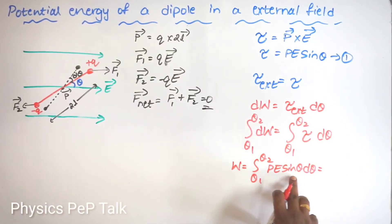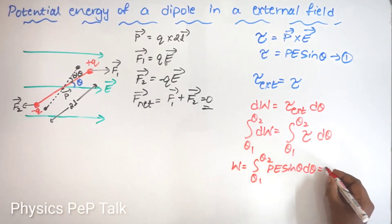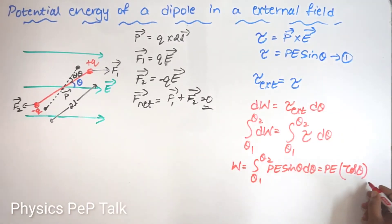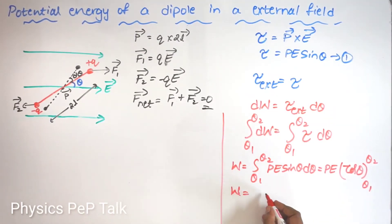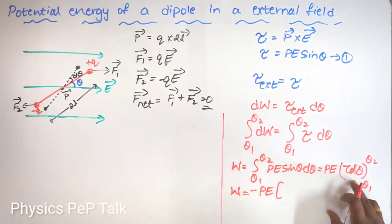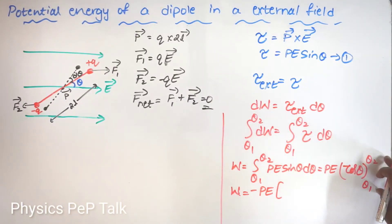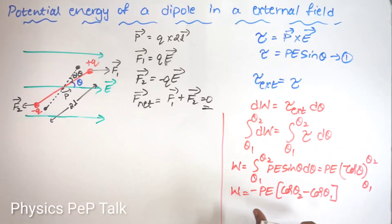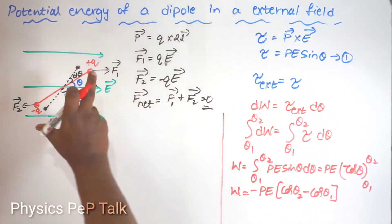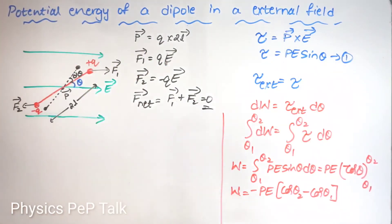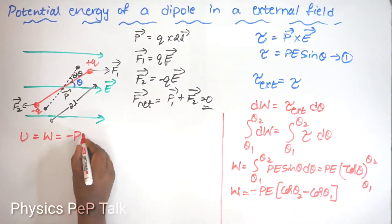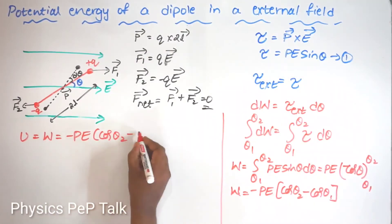So the total work done is W = −PE (cos θ2 − cos θ1). Therefore, the potential energy U equals the amount of work done, which is U = −PE (cos θ2 − cos θ1).